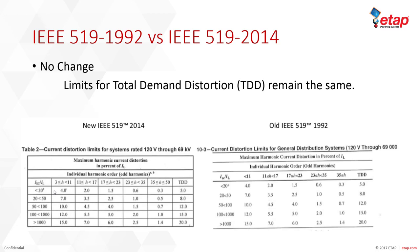The total demand distortion column represents the SCR, or short circuit ratio, which is the maximum short circuit current at the point of common coupling over the maximum demand current of fundamental frequency at the PCC. An SCR under 20, say 10, typically expresses a very large load, while an SCR greater than 1000 represents very small loads.